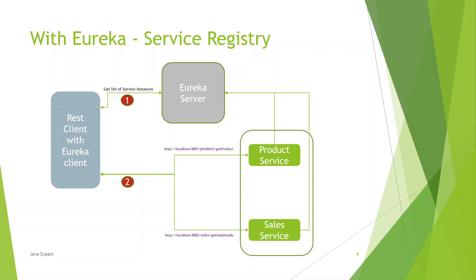When the REST client wants to call any service, it first talks to the Eureka server and gets the list of instances for that service. For example, to get product service details, the REST client requests from the Eureka server and receives all instances — say five product service instances with their host names and port details. The built-in Eureka client load balancer then decides which of the five instances to invoke using round-robin, and the call is made to the product service. The same flow applies to the sales service as well.